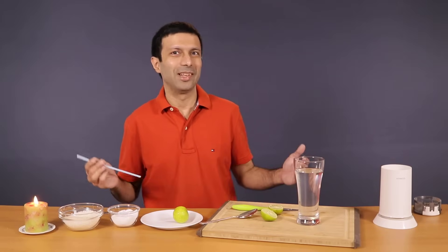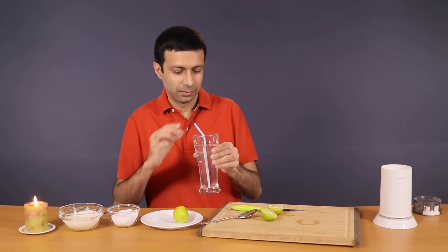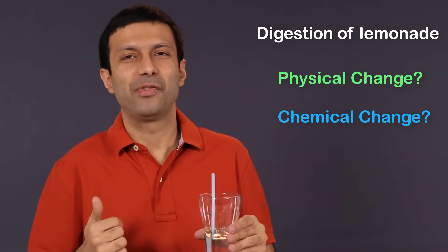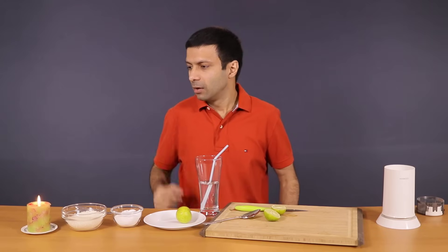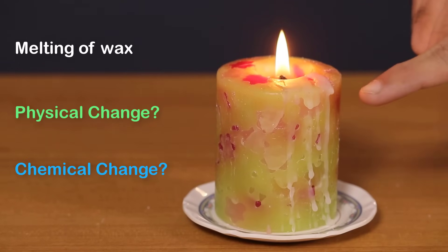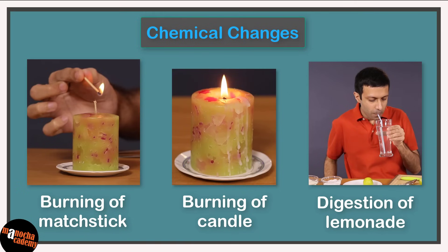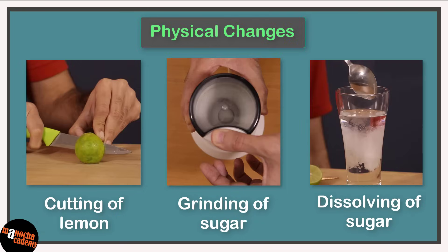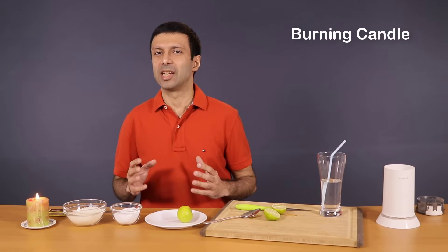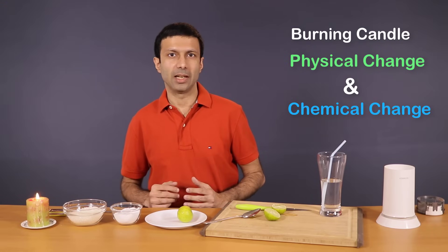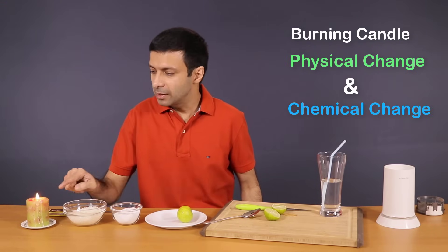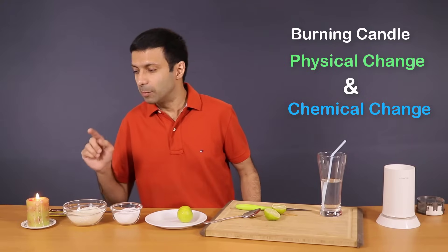Now let me enjoy the lemonade — it's perfect and refreshing. The candle is still burning. Can you see the wax that has melted here? Are you ready with your answers? In all the changes you saw, these are the chemical changes — in these, some new substances are formed. And here are the physical changes — in these, no new substances are formed. A burning candle is an interesting example where both physical and chemical changes are taking place. The physical change is the melting of the wax, and the chemical change is the burning of the candle.